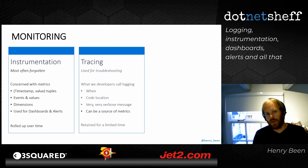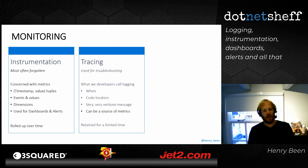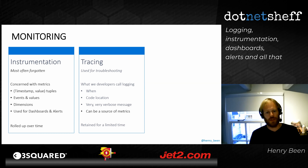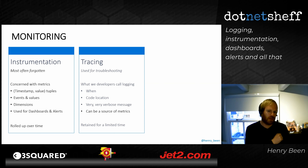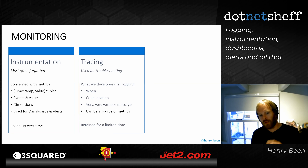The second pillar is tracing — what we developers simply call logging. This is about getting messages out of your application telling you what it's doing: the class name, line number, method name, variable values. It's very code-oriented. It generates a lot of data, but it's very valuable for troubleshooting. Because troubleshooting is the primary use, we don't have to retain it very long — often two to four weeks, or a bit longer if you're working in a bank.